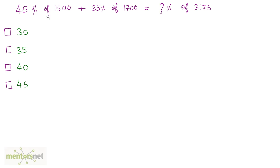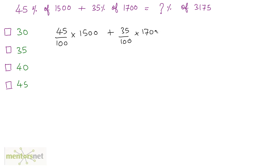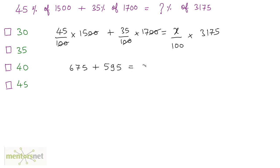Let us get to the third question. We have 45% of 1500 plus 35% of 1700 is equal to how much percent of 3175? We can write this as 45 upon 100 times 1500 plus 35 upon 100 times 1700 is equal to x upon 100 times 3175. The hundreds cancel out, giving 45 times 15 which is 675, plus 35 times 17 which is 595, equal to x times 3175 divided by 100.